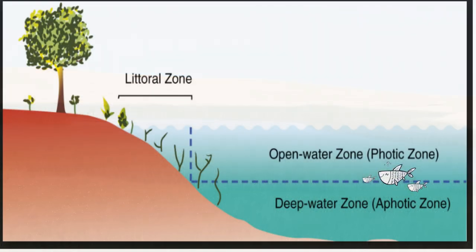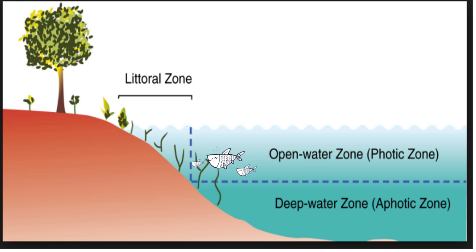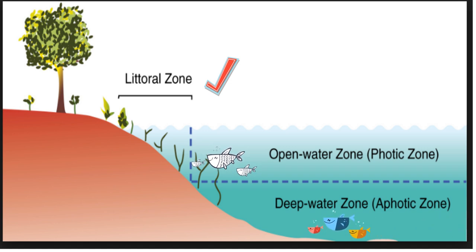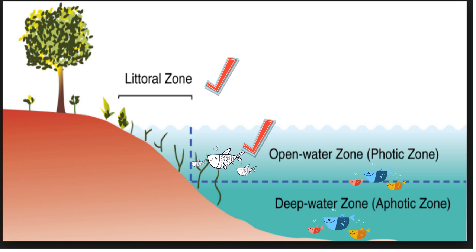You can find three areas of a lake or pond. The littoral zone is the part near the shore. The water found in the middle and on top is called the open water zone. And beneath the open water zone is the deep water zone.